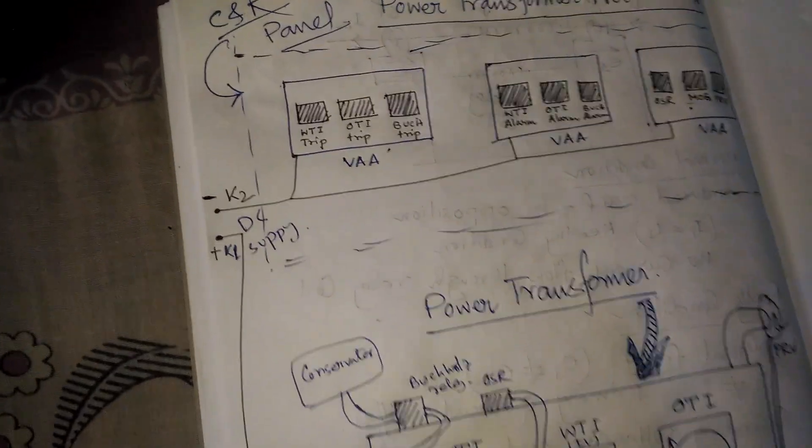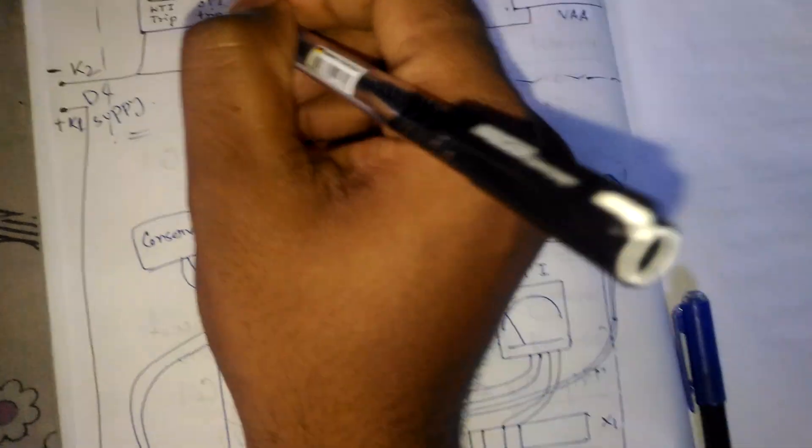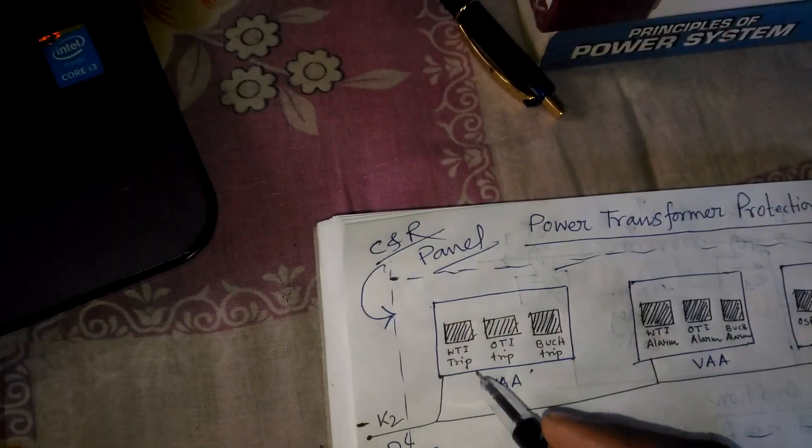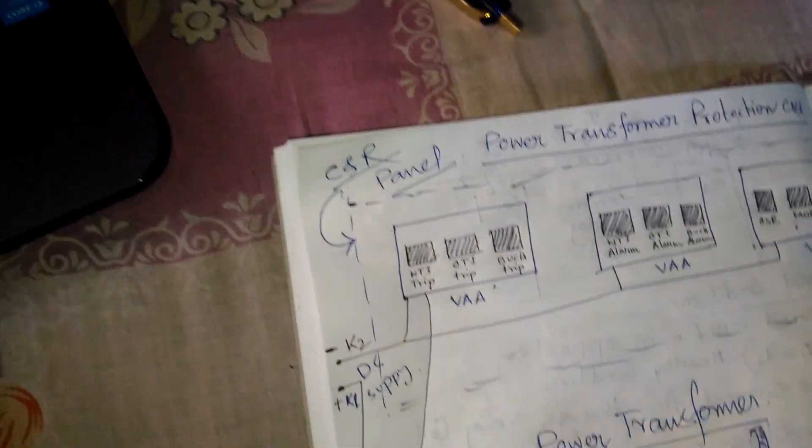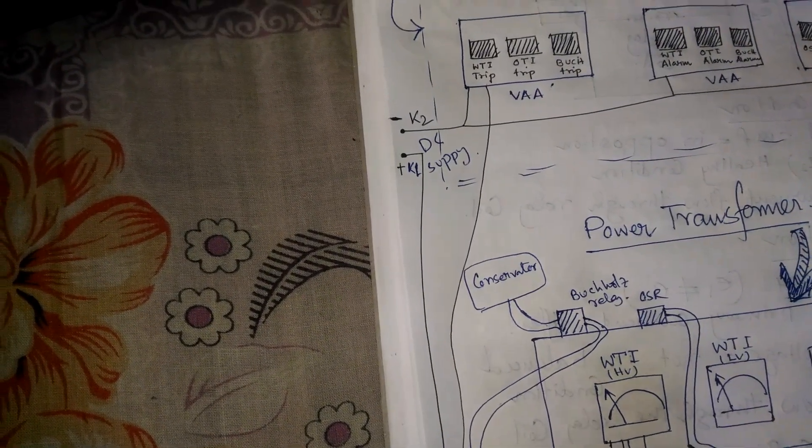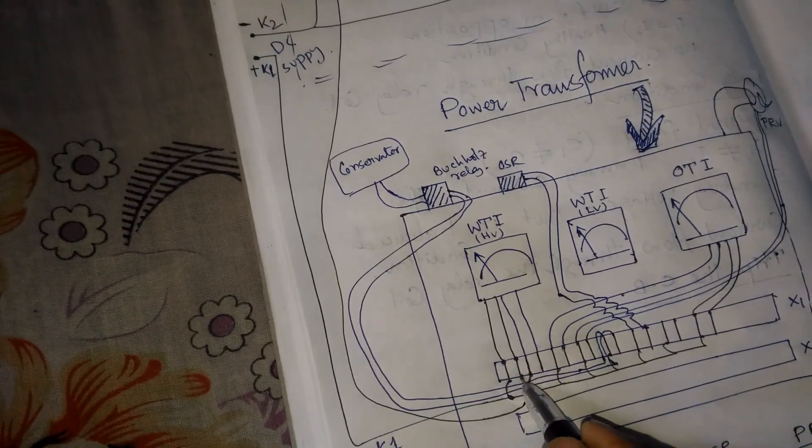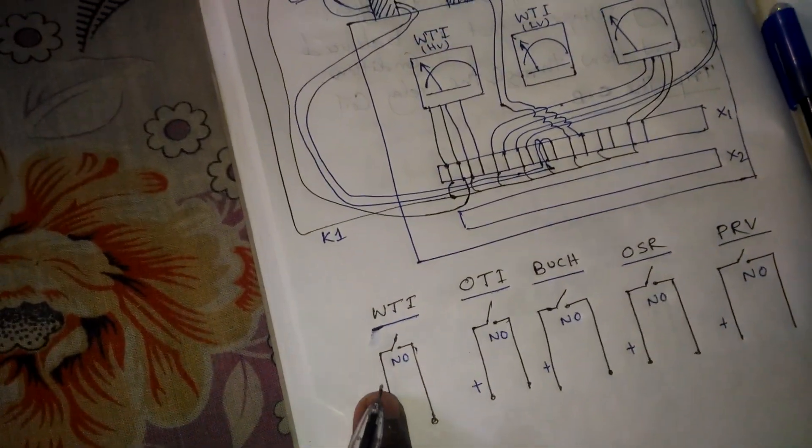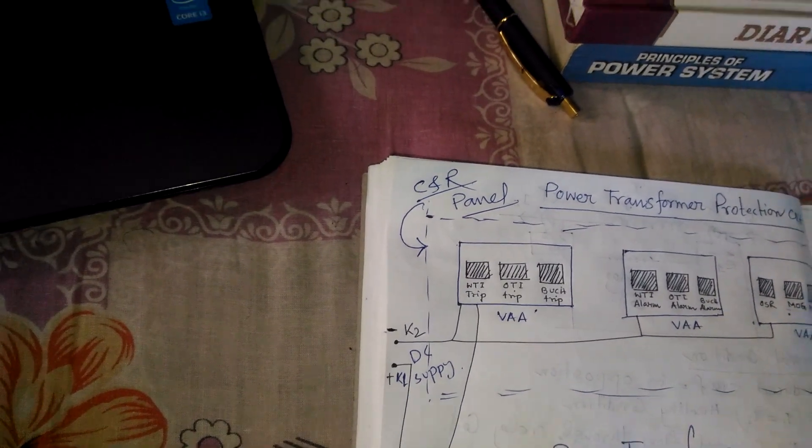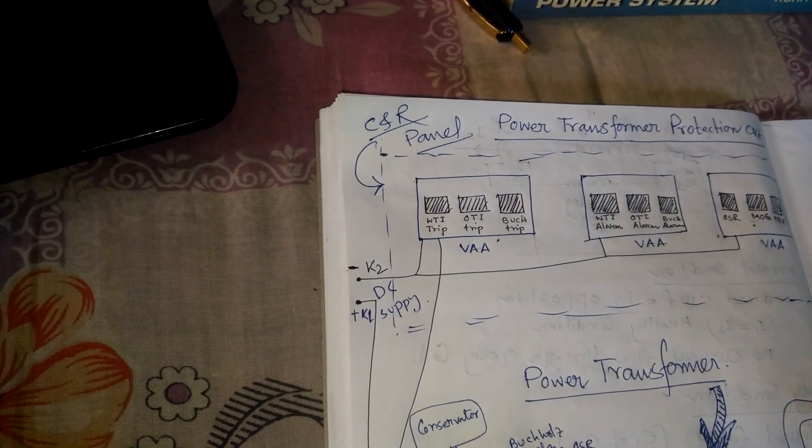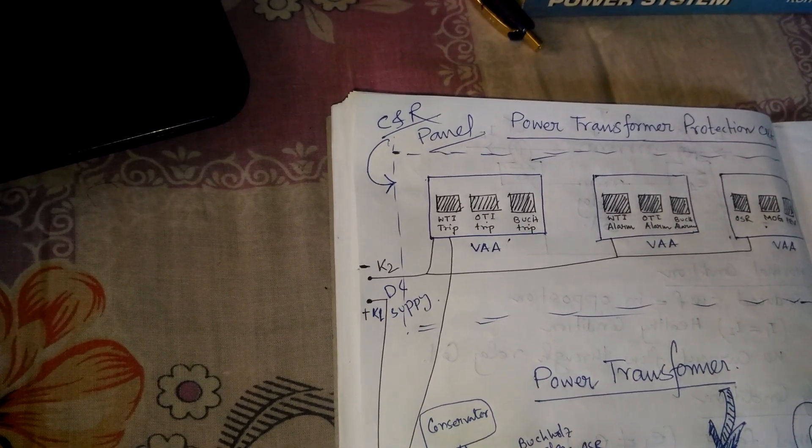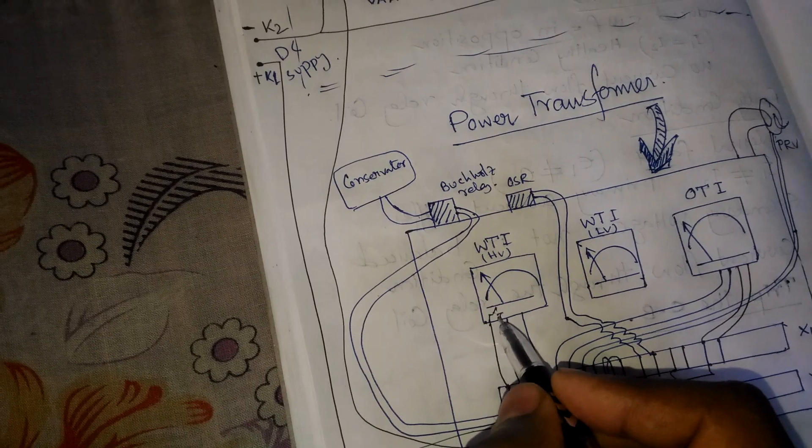Now we are connecting this supply. We are already providing negative to every relay. For the WTI alarm, if this NO contact converts to NC or the contact is made, the positive comes from K1 and the positive is back from this path.